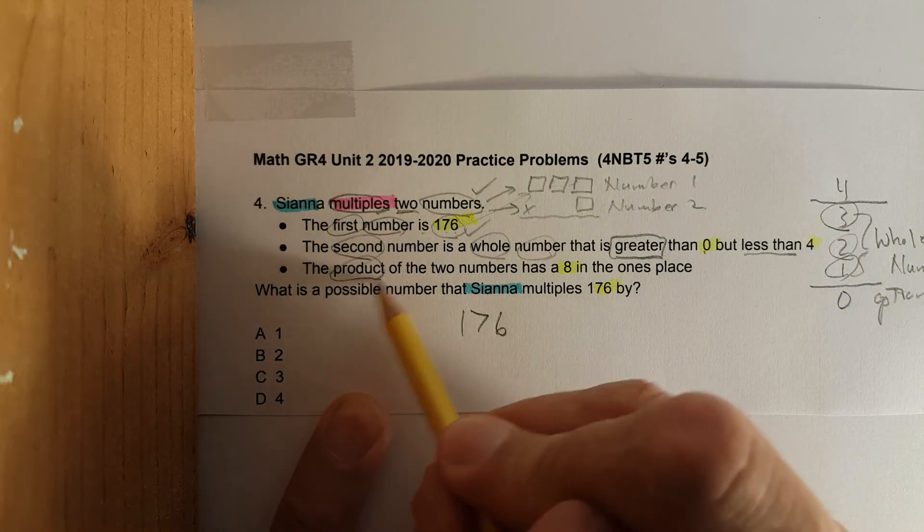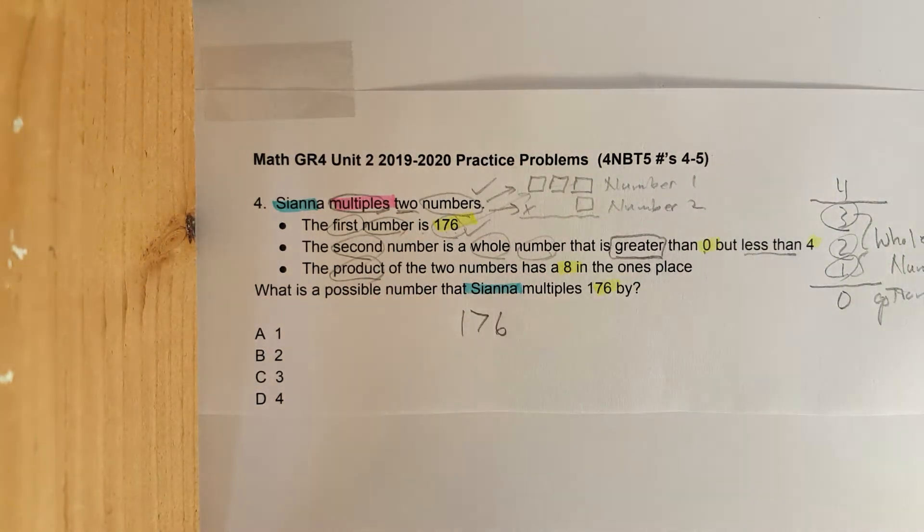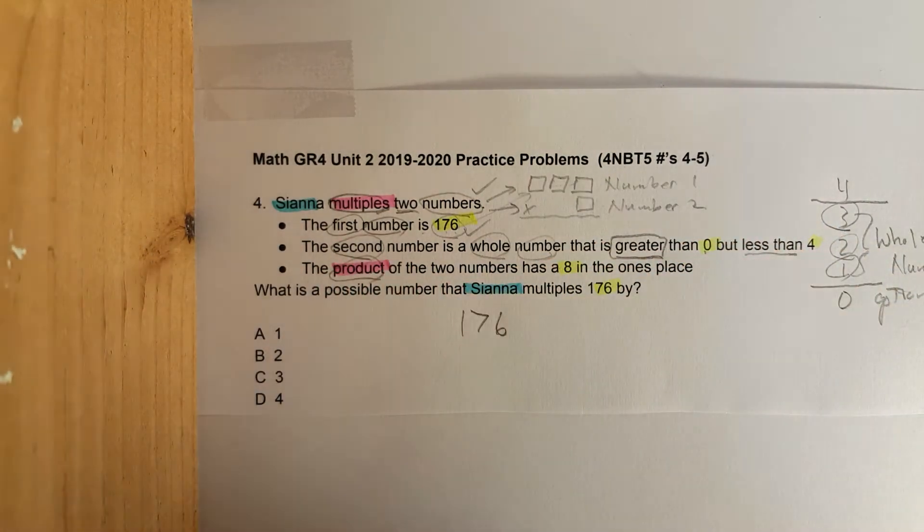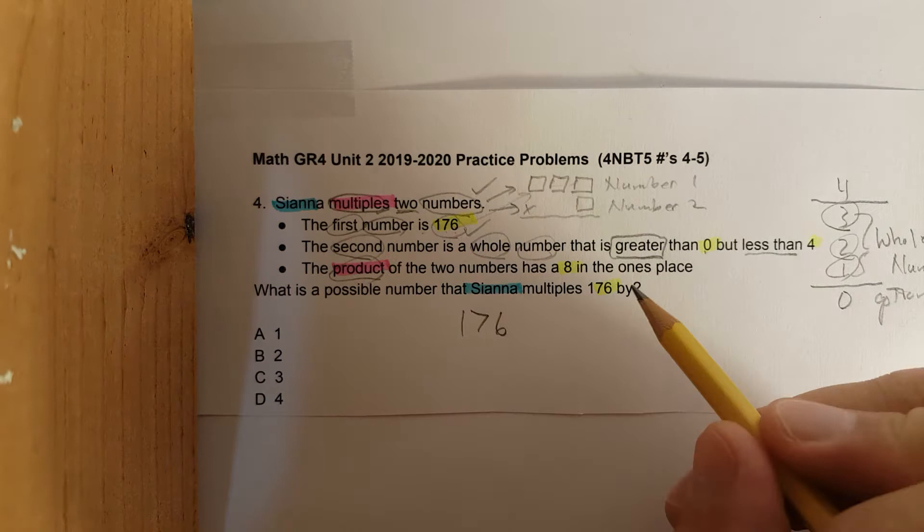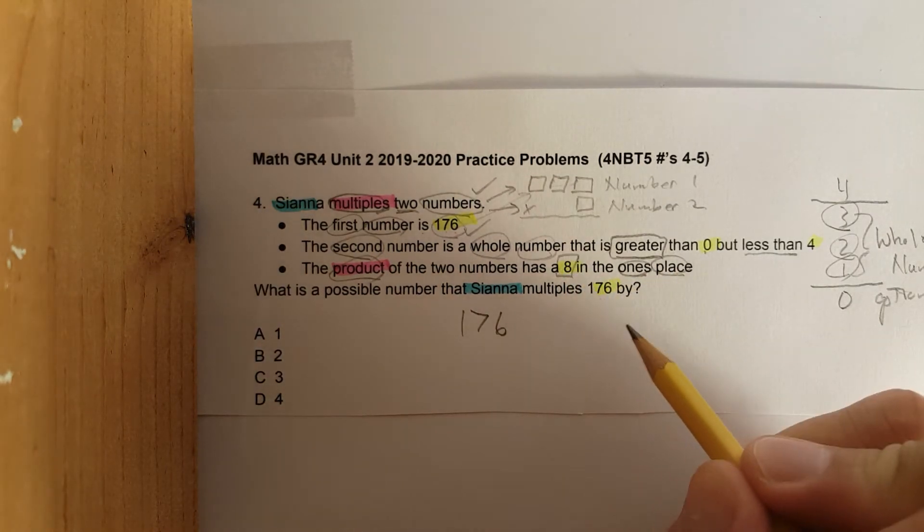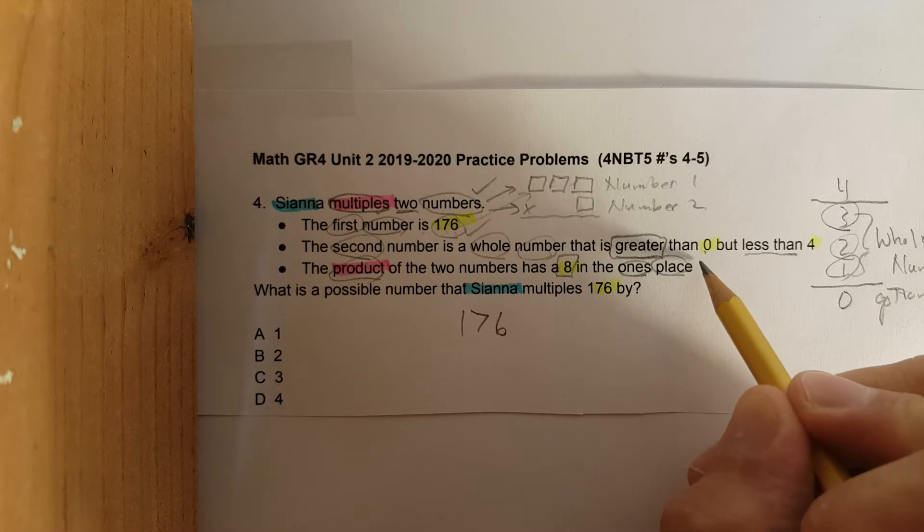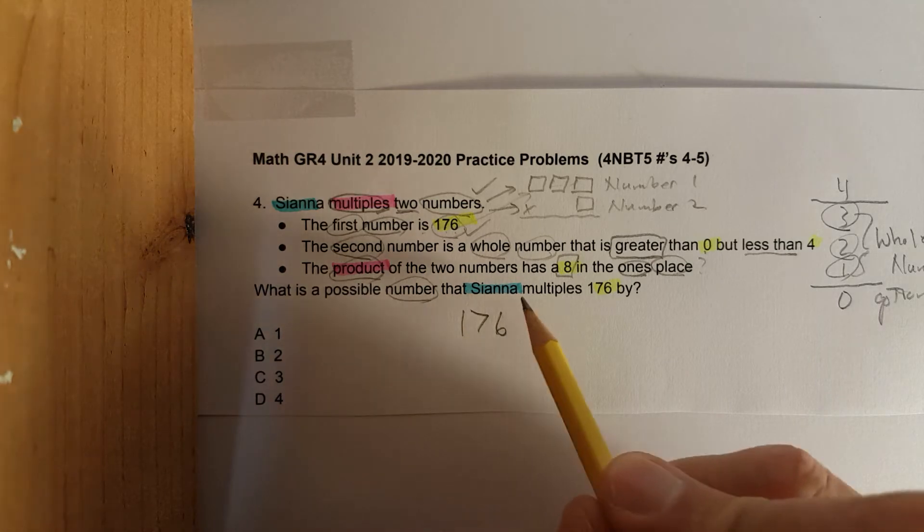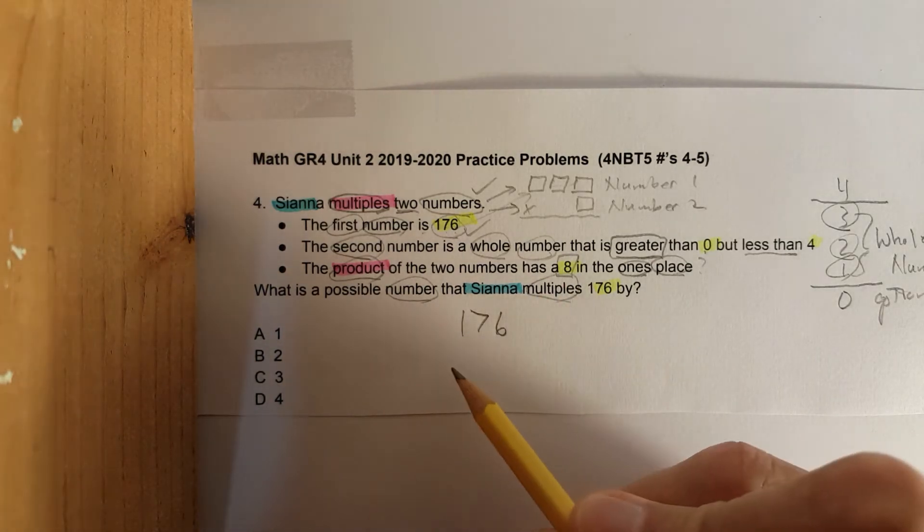The product—so you see the word product again. Remember, product is the answer or result of a multiplication problem. Of two numbers has an eight in the ones place. That's it. Doesn't tell us anything else. What is a possible number that Sienna multiplies 176 by?